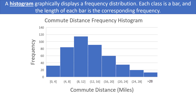Instead of thinking of the mode as the single value that occurs the most frequently, you might think about the mode as approximately where most of the values fall in your distribution. The easiest way to visualize that is to look at a histogram. So here I have a histogram from my graphical displays of data video. Instead of saying the mode is one single value, we might say the mode is kind of within the range of maybe 8 to 12, because that is where most of the values fall in the distribution.